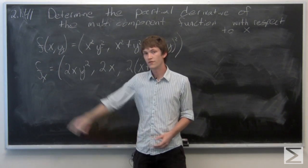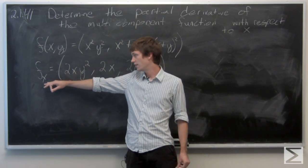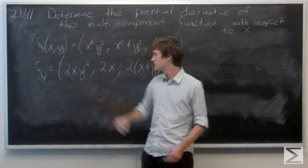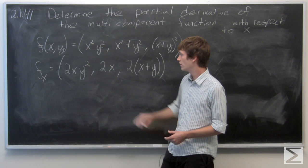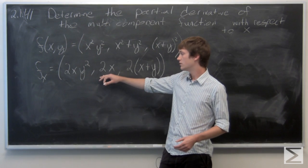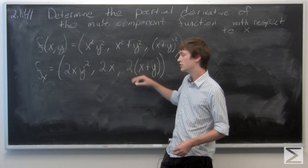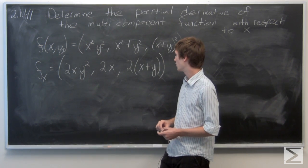We find that the partial derivative of f with respect to x is 2xy squared, 2x, and 2 times x plus y.